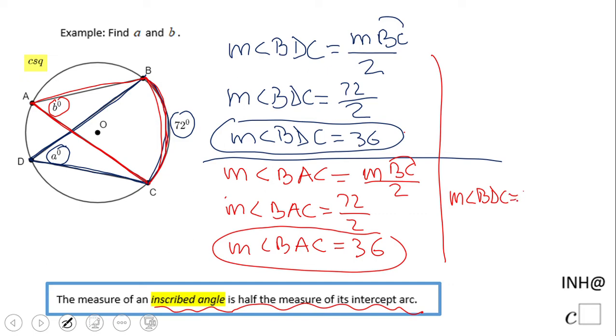Or of course, you can say angle BDC is congruent to angle BAC because they have the same intercepted arc. If they have the same intercepted arc, in this case BC, the measure of the angle is the same and the angles are congruent.